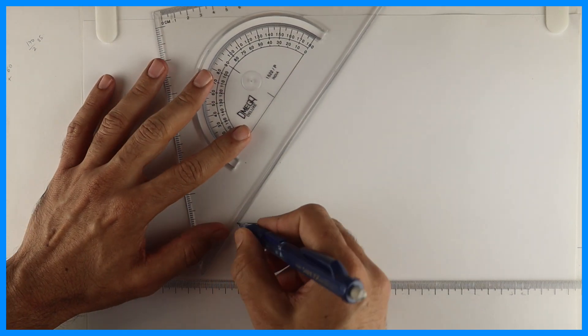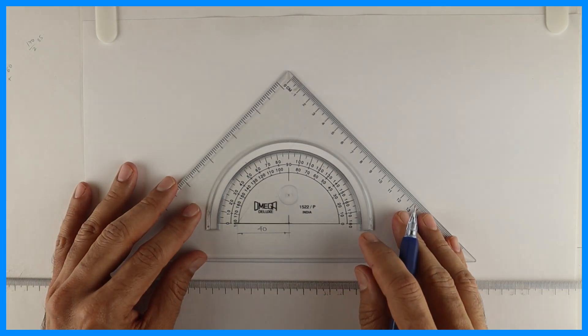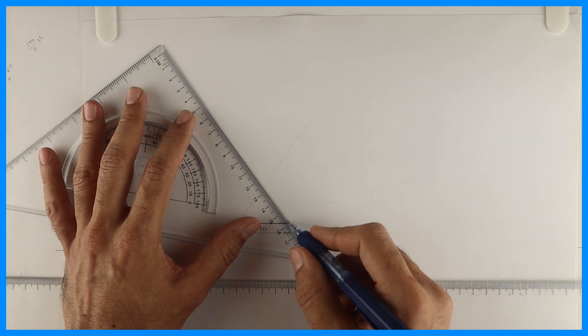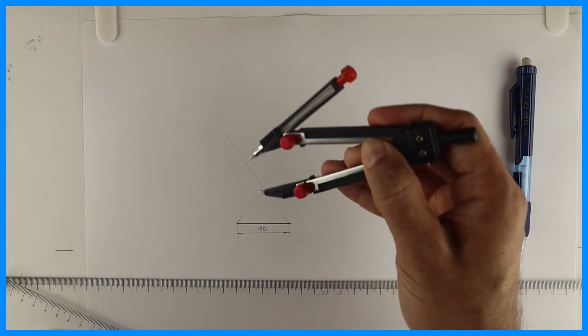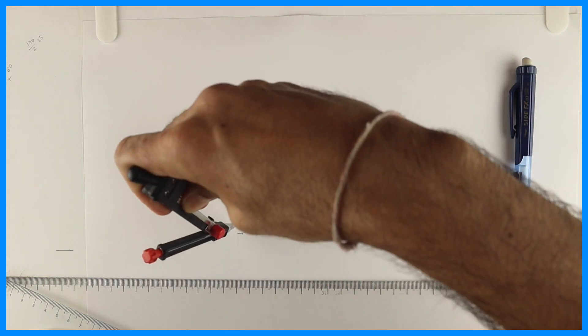Then you mark 54 degrees, see this. Then again from here you can mark 54. Wherever they intersect, from that point you draw circle.